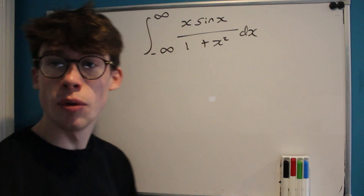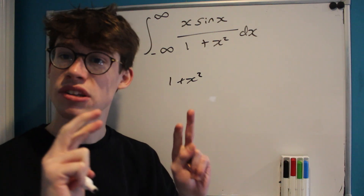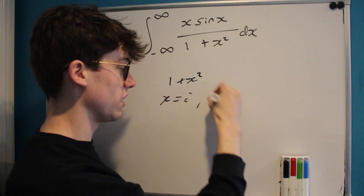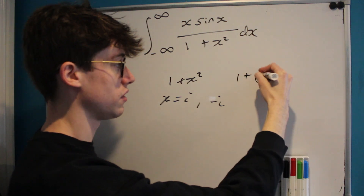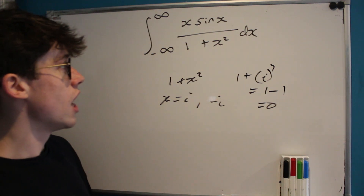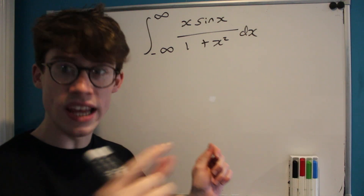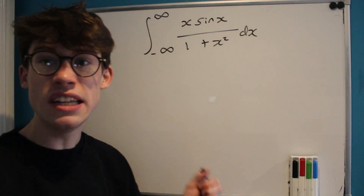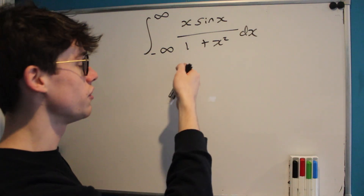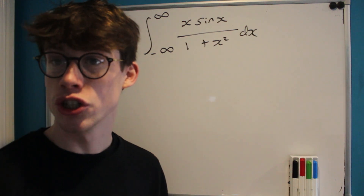The first thing is the denominator of the integrand: 1 plus x squared is going to have poles — points at which it's undefined or blows up to infinity — at imaginary values of x, namely at i or negative i. At these points we end up with 1 plus i squared, which is 1 minus 1, which is 0, and we can't divide by 0. Another clue is the bounds from negative infinity to positive infinity, because often when choosing contours it's easy to choose ones that go along the entire real axis. And in tandem with the denominator, we also have a trigonometric function in the numerator — a sine x.